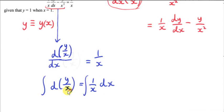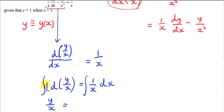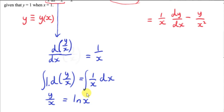Think of y/x as a variable. On the left-hand side, we are integrating 1 with respect to y/x, which gives just y/x — since 1 is just a constant. On the right-hand side, we have the integral of 1/x, which is ln(x). We have a constant of integration, which we put on the right-hand side — there's a constant of integration from both sides, so we'll just put it on the right.